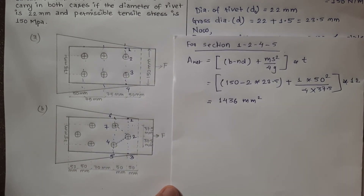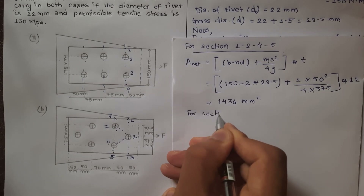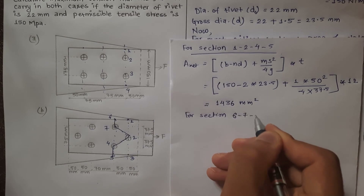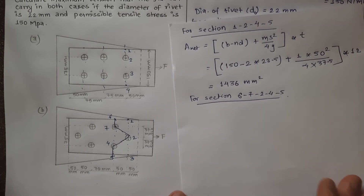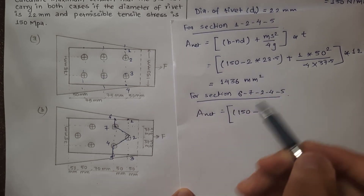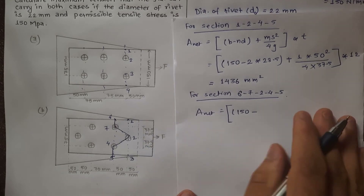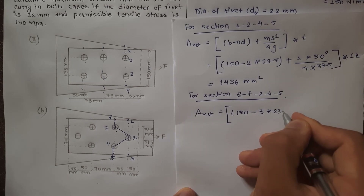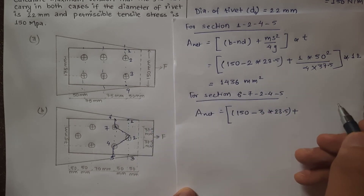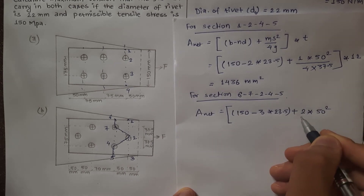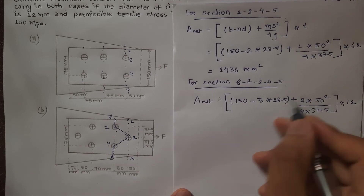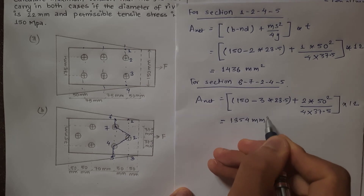Calculating the net area for section 1-2-4-5: A_net = (150 − 2×23.5 + 50²/(4×37.5)) × 12. For section 1-2-3: A_net = (150 − 3×23.5 + 2×50²/(4×37.5)) × 12 = 1354 mm². Also section 1-2-4: A_net = 1436 mm². The value 1354 mm² is calculated as the net area for the governing staggered section.